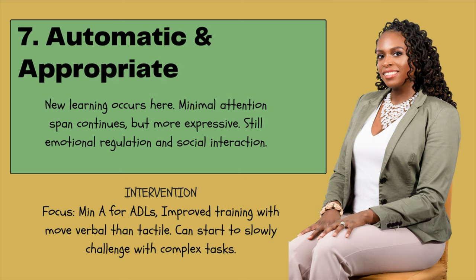Stage seven is your automatic and appropriate phase — this is where new learning occurs. There's a minimal attention span that continues, but they're more expressive. They're still having difficulty with emotional regulation and social interaction. For ADLs, the intervention is going to be about minimum assistance. You're working on improving training with verbal and tactile cueing. You can start to slowly challenge them with some complex tasks, but not too complex, because they're now starting to come into their own. This is definitely the stage where you're going to start seeing an increase in learning.